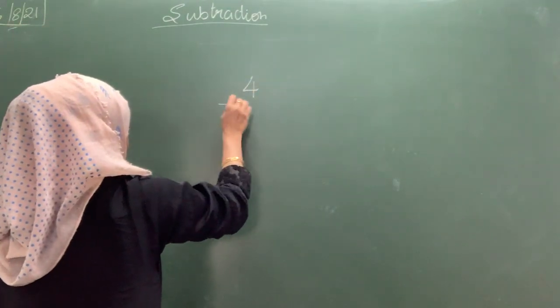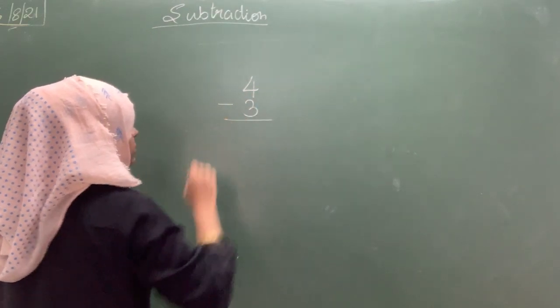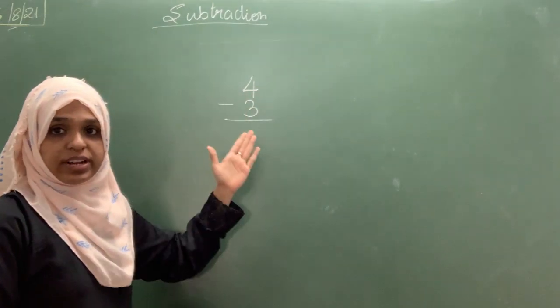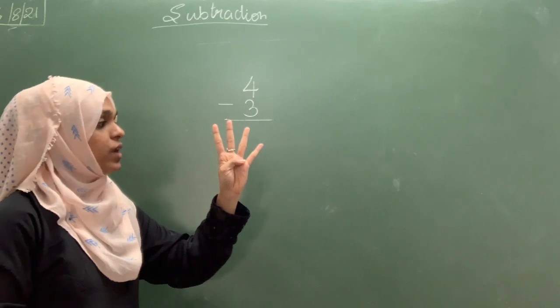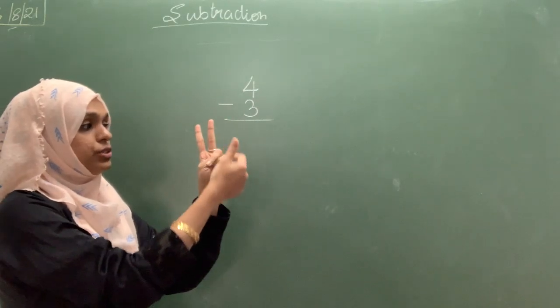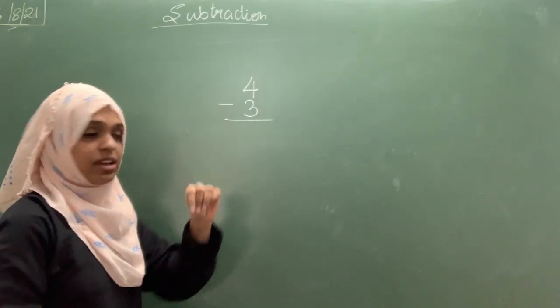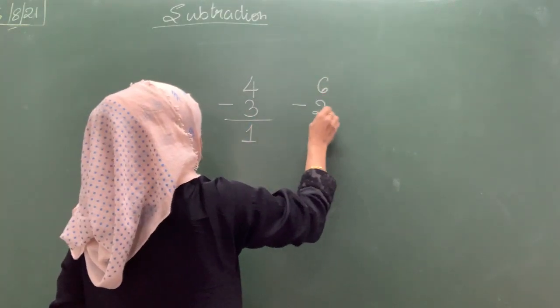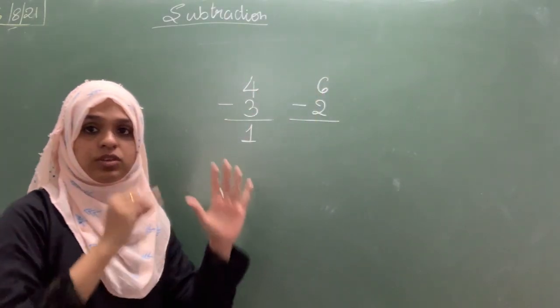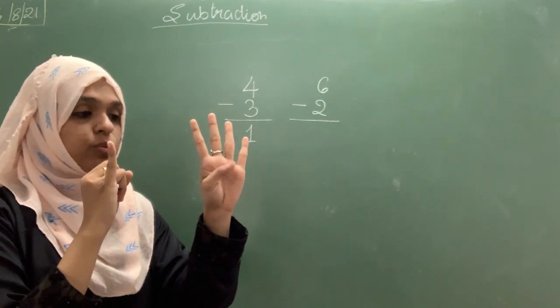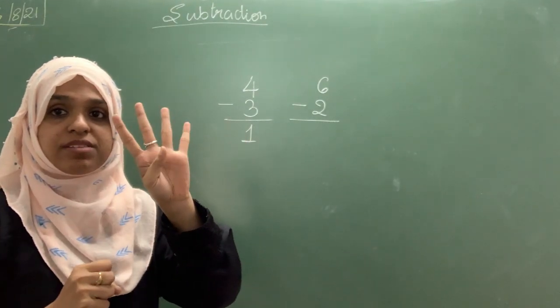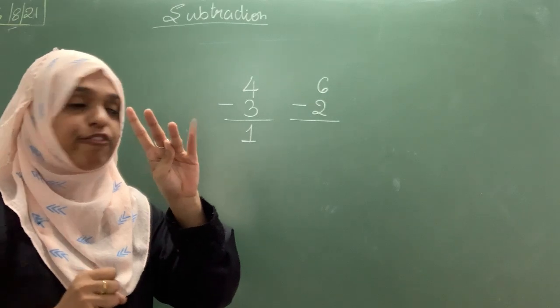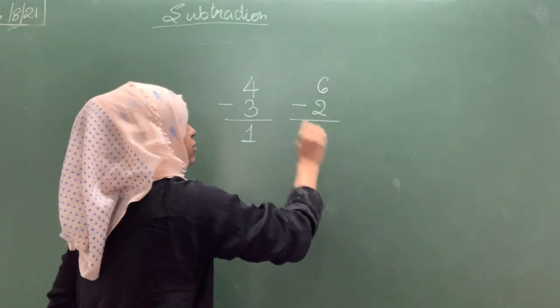Last time we saw 4 minus 3. So there is only one digit. So from 4 you have to remove 3 fingers. 1, 2, 3. How much is left? 1. Then 6 minus 2. You have 6 fingers and cut down 2. 1, 2. How many fingers left? 1, 2, 3, 4. We write here 4.